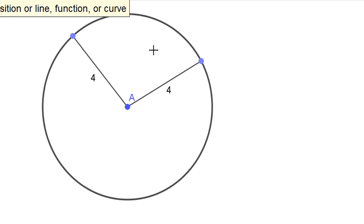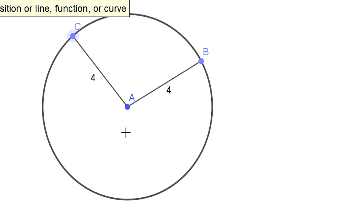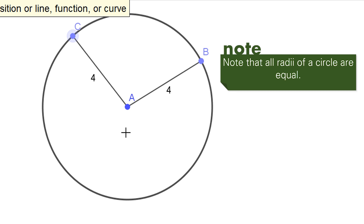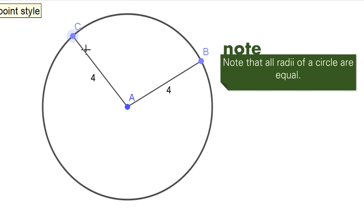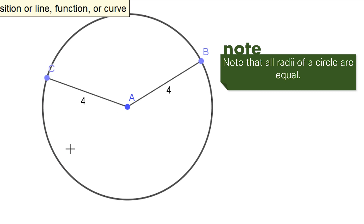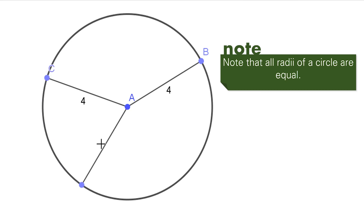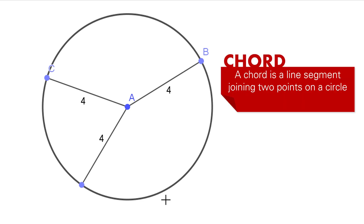Let's name two points on the circle — B and C. Line segment AB is a radius, and line segment AC is also a radius. Note that all radii of a circle are equal — no matter where you locate a point on the circle, the distance from the center is always 4 units.